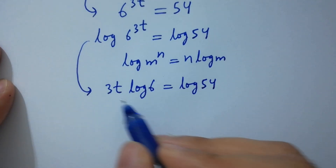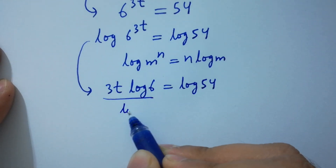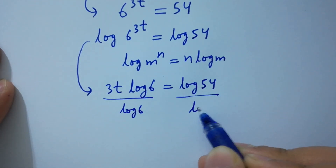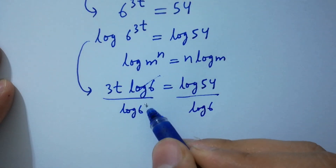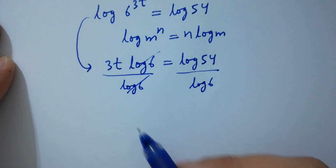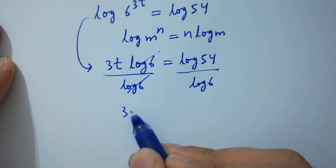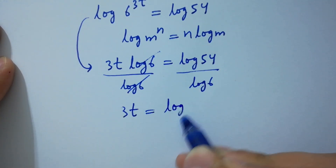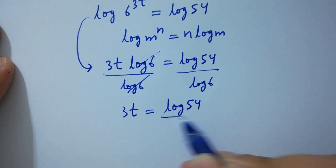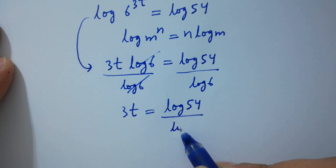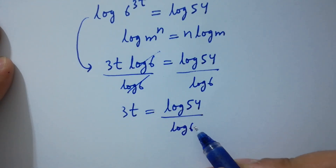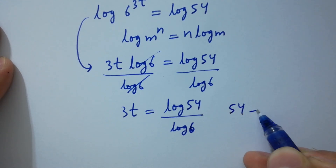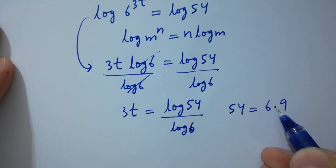Dividing both sides by log 6, log 6 and log 6 cancel. So 3t equals log 54 over log 6. Now, log 54 equals log of 6 times 9.